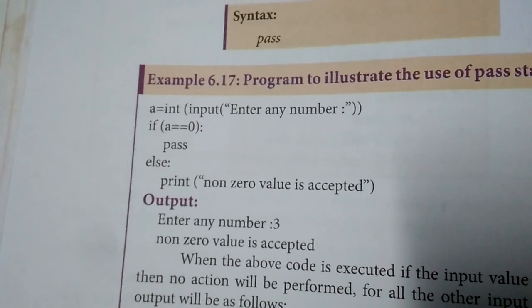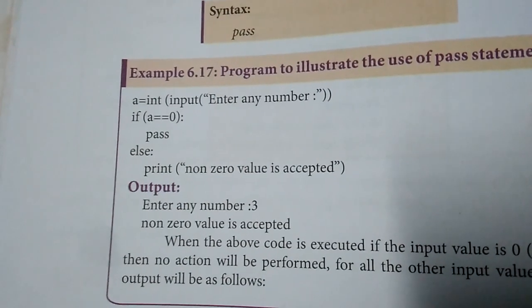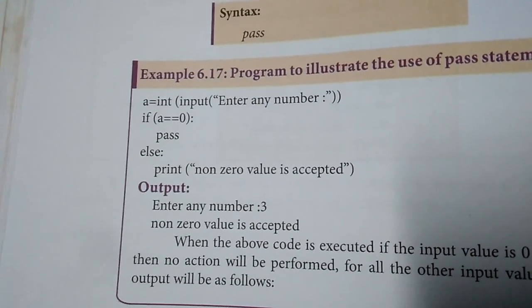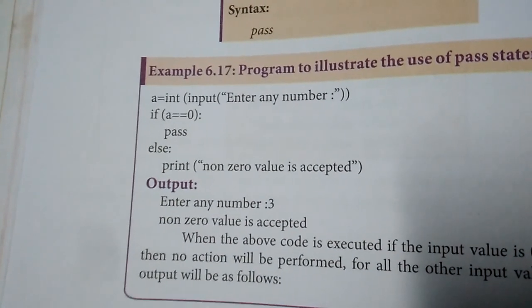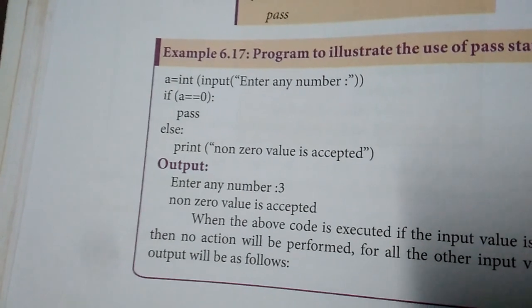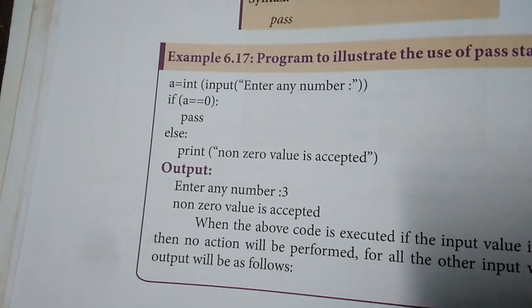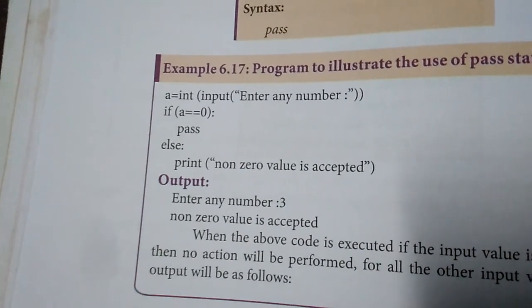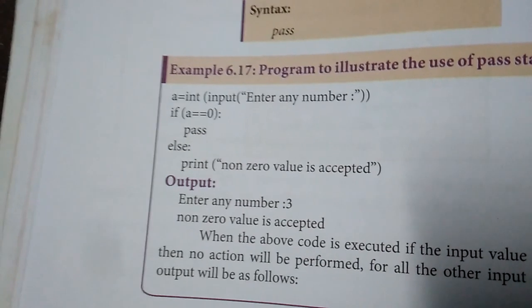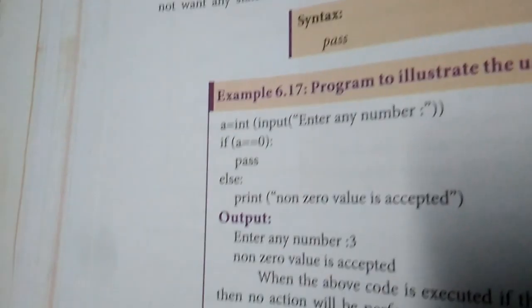The pass statement does nothing. For example, a equals integer value. If a equals 0, check and pass. Else, print. When I give 3, the non-zero value is accepted, so the else part works. Pass is generally a placeholder. We use it when we want to ignore the statement. When the condition is true, we ignore it and execute the else statement.